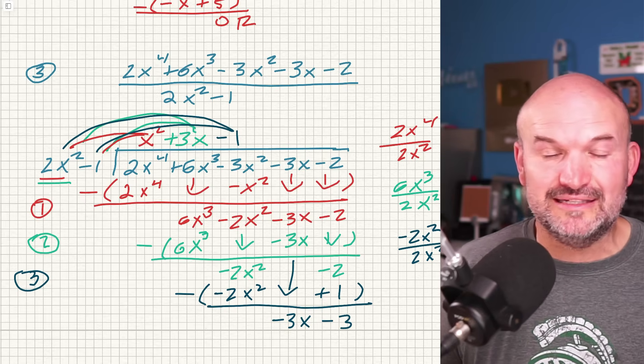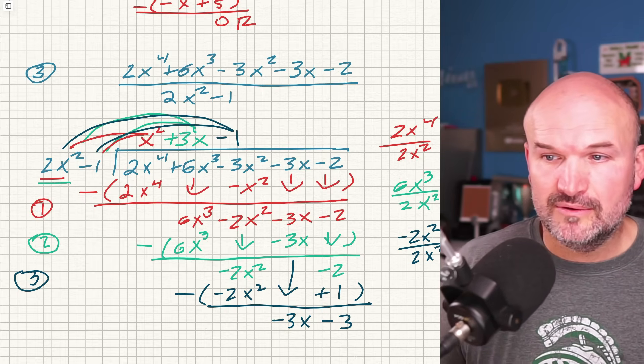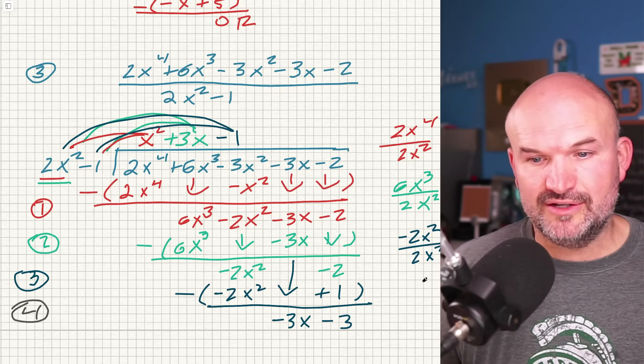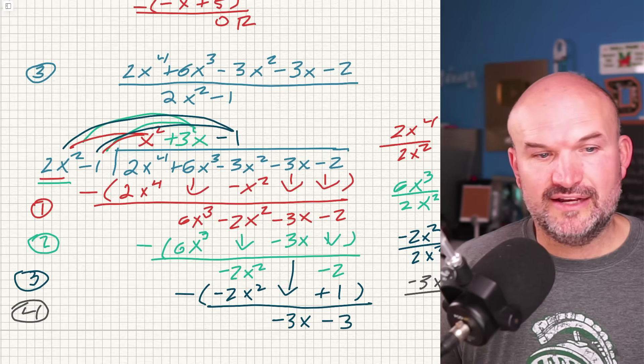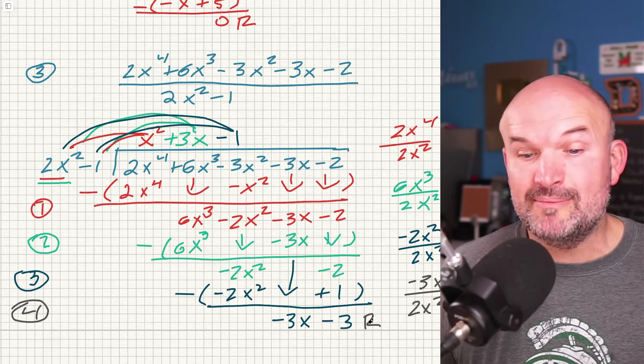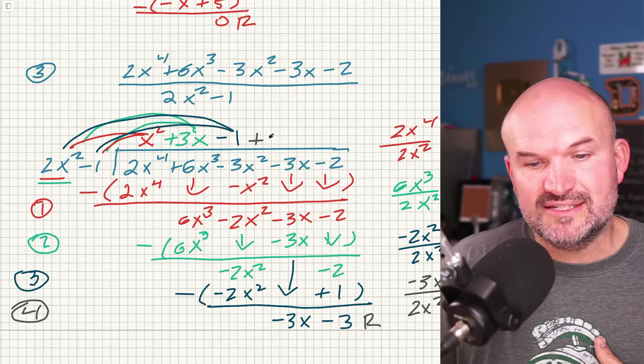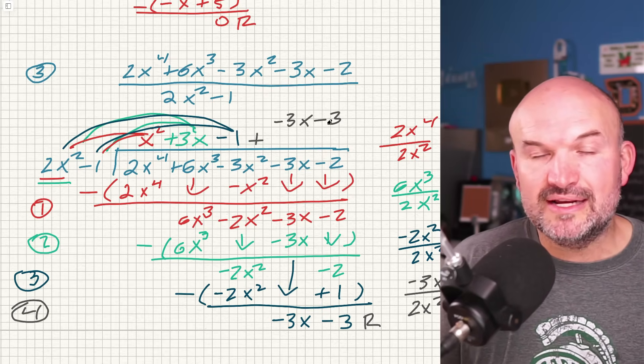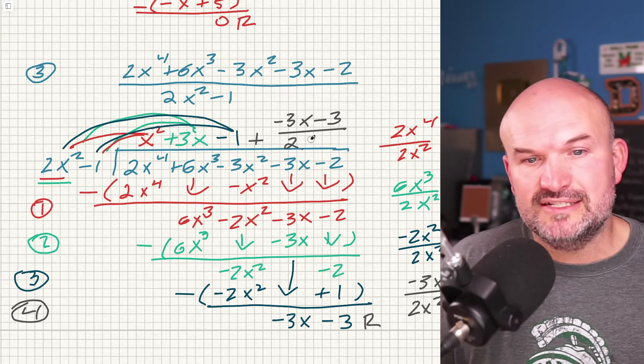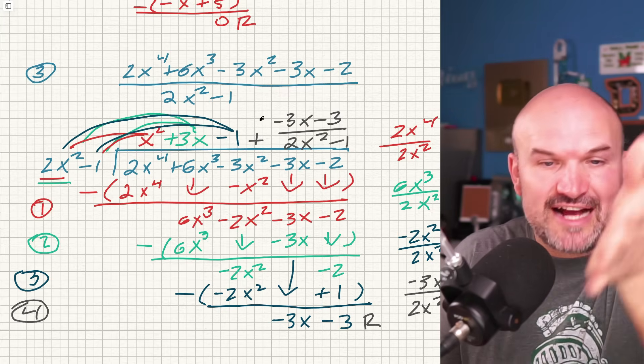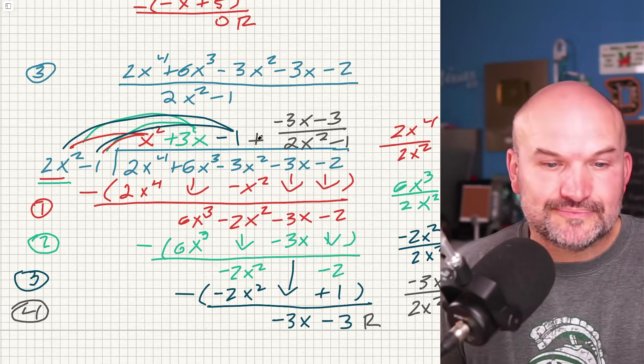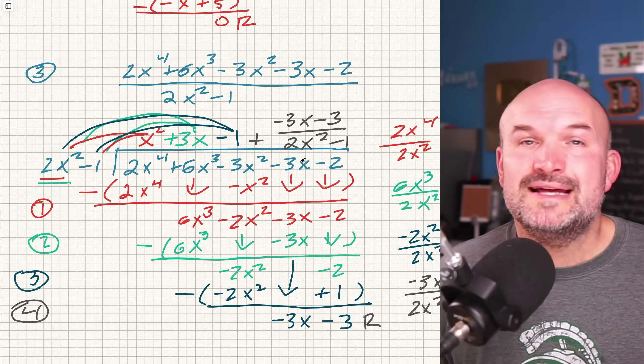And then now, unfortunately, ladies and gentlemen, what you can see is for my step number four, which I guess I'll use this one, I cannot divide 2x squared into negative 3x, right? Look at this. If I have negative 3x, negative 3x does not evenly divide into 2x squared. So we can't do it. So this is going to be what we call our remainder. So I always like to go ahead and write this as plus, and then I'll just take my remainder, which is negative 3x minus 3. And do you remember what we do with our remainder? We take the remainder and we put it over our divisor, which in this case is 2x squared minus one. Now you could factor out a negative in this case, and then rewrite that as a subtraction problem. That is perfectly fine. But there you go, ladies and gentlemen, there is your step-by-step process for long division.